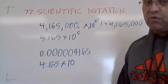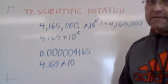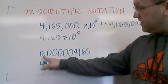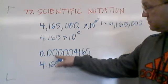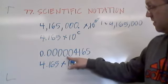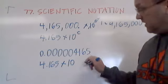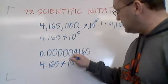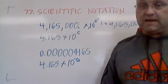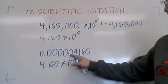In this case, we are moving the decimal place in the opposite direction. We are moving it this way, 1, 2, 3, 4, 5, 6 places, but to the negative because we are making the number smaller.